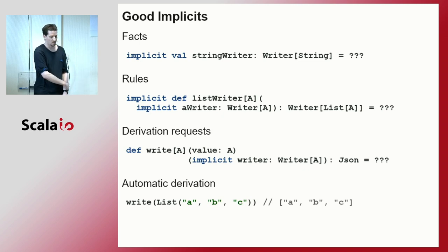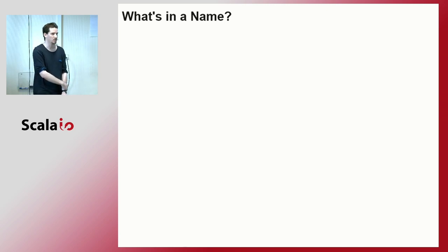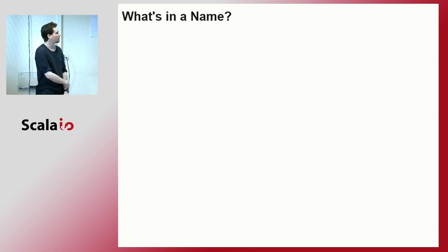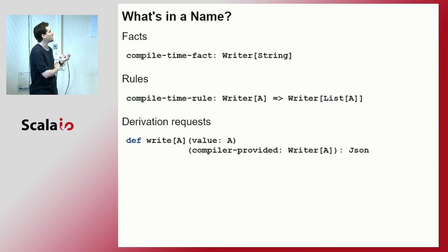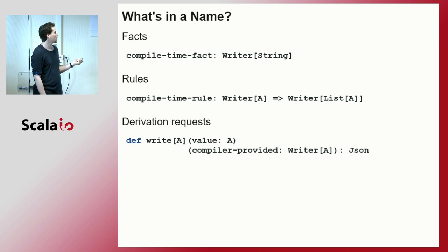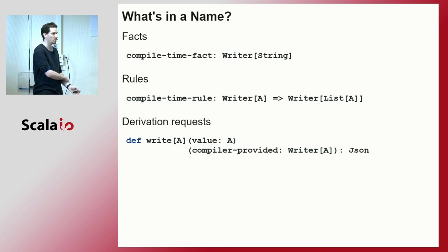I want to briefly complain about the name 'implicit' — I think part of the reason newcomers are afraid of it is that the word is scary. Something happening in the background. I propose renaming them: implicit values become compile-time facts, implicit defs become compile-time rules, and implicit parameters become derivation requests. With this terminology it's obvious we're not doing implicit magic — we're actually communicating with the compiler: stating various facts and rules, and the compiler will do something useful with them.